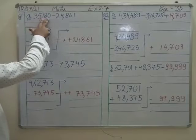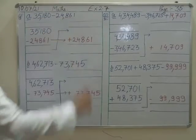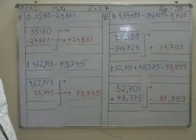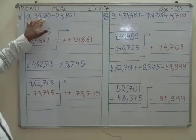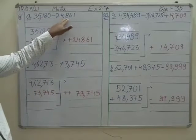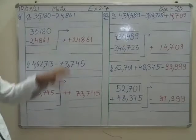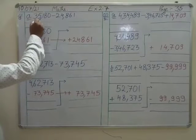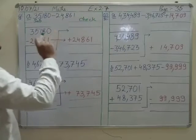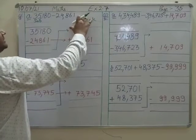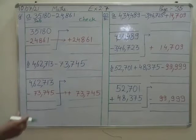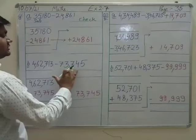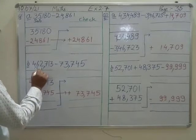Part A is 35,180 minus 24,861. If any digit you do not understand which is written on the board, kindly tell me. This is subtraction and you have to check your answer. We will do subtraction first, and then we will check our answer. Similarly, in Part B we have 4,62,713 minus 73,745. First we will subtract, then we will check.